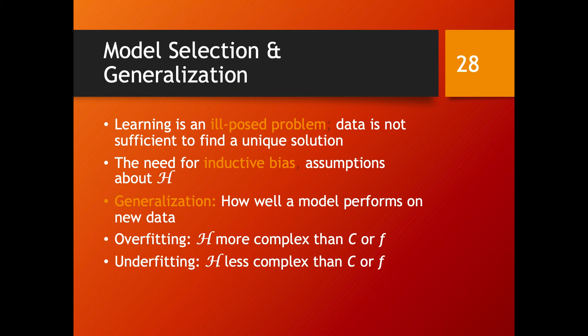As a response to this, you are going to make some assumptions about which are the reasonable functions you expect to explain that data. It's not that they are the only explanation — it's just that you don't have enough data to explore all possible explanations. So you are going to fix your hypothesis set, which gives you the so-called inductive bias. And the most important question remains that of generalization: how well a model performs on new data.